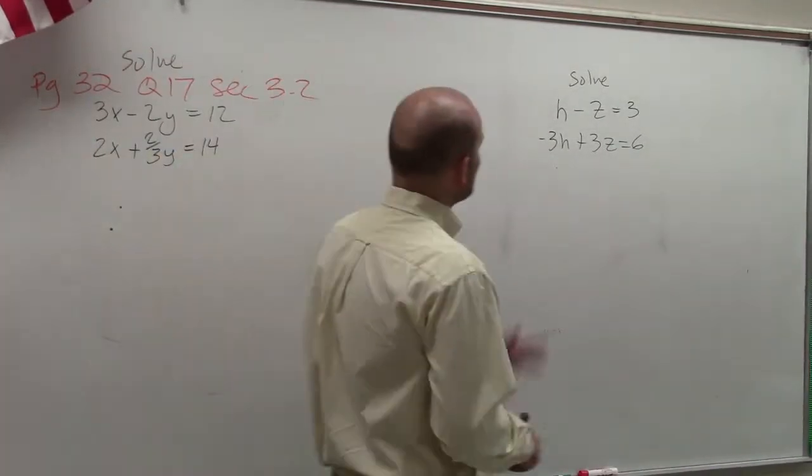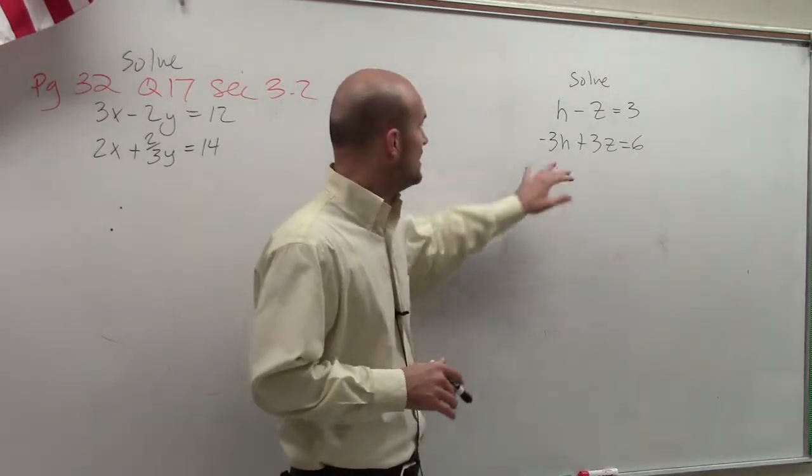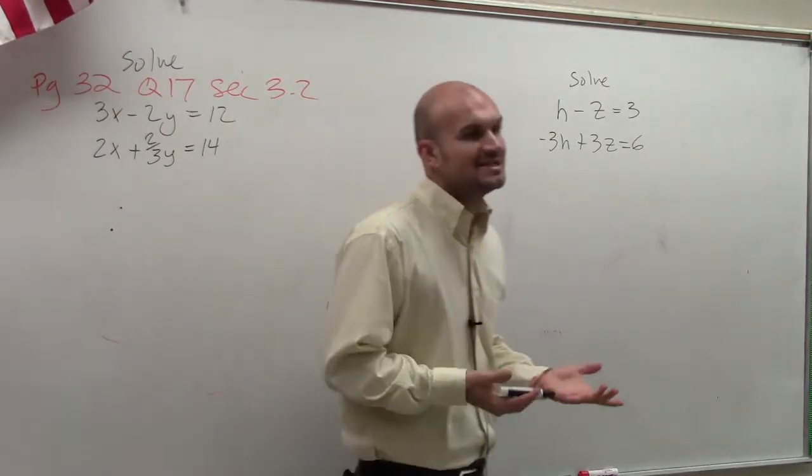Let's try that again. Take two. So what I'd like to show you guys is how to solve a system: h minus z equals 3, and the other equation is negative 3h plus 3z equals 6.